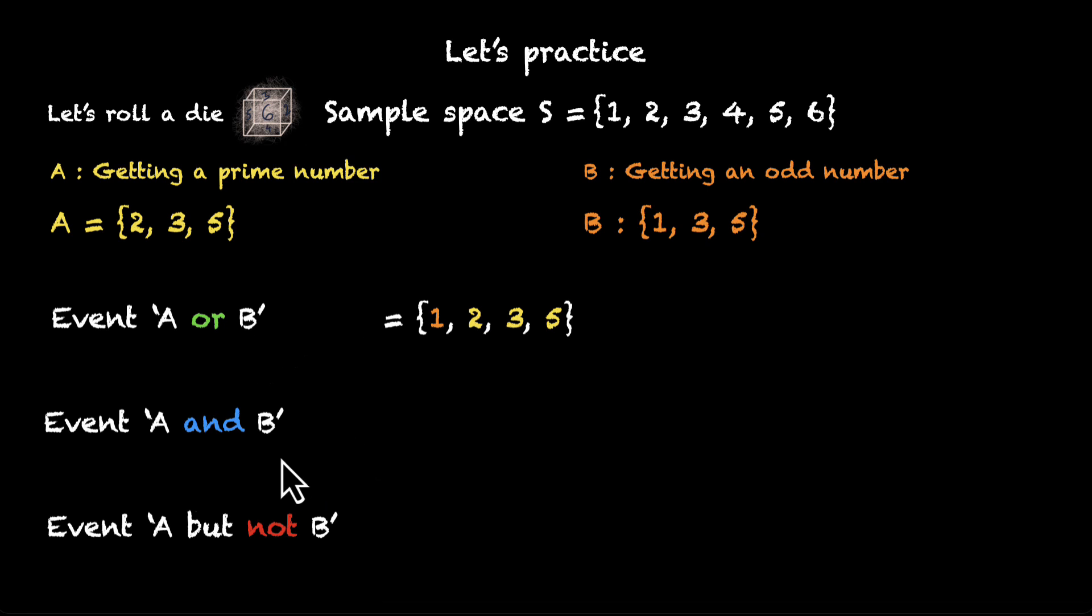Let's look at the next one, event A and B. Now, for this, we need things that are both in A and in B. So, we have 3 and 5. That's common. So, that will be our event A and B. So, when 3 happens, we can say that both event A and B have happened, or we can say that the event A and B has happened.